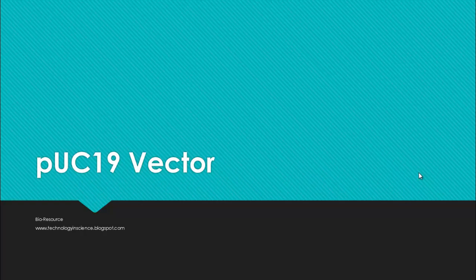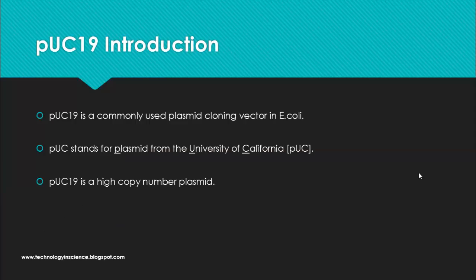Welcome to the presentation on PUC19 vector. PUC19 is a commonly used plasmid cloning vector used in E. coli. PUC stands for plasmid from the University of California — P for plasmid, U for University, and C for California. The initial developmental work was done at the University of California, which is why it is named PUC.